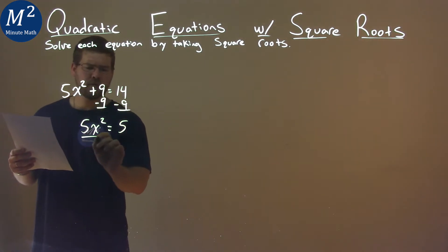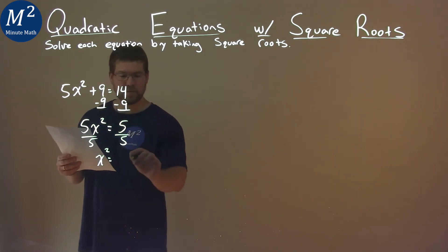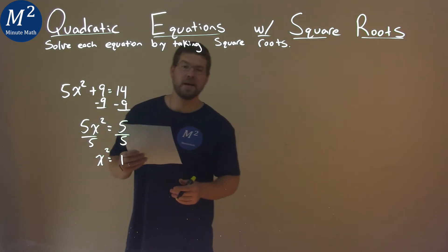Well, divide 5 to both sides here, and we have x squared equals 5 divided by 5 is just a 1. Not too bad, not too bad.